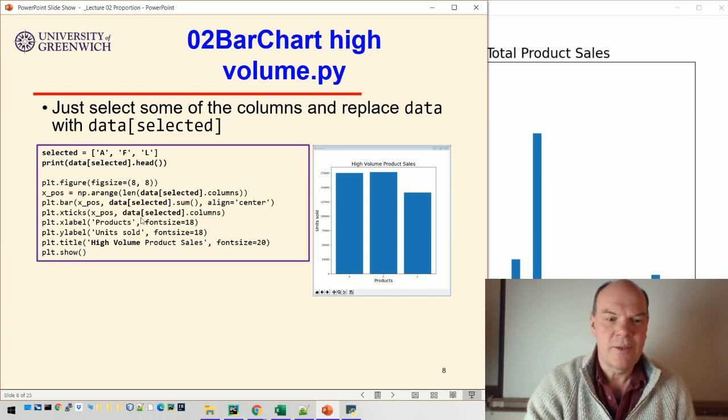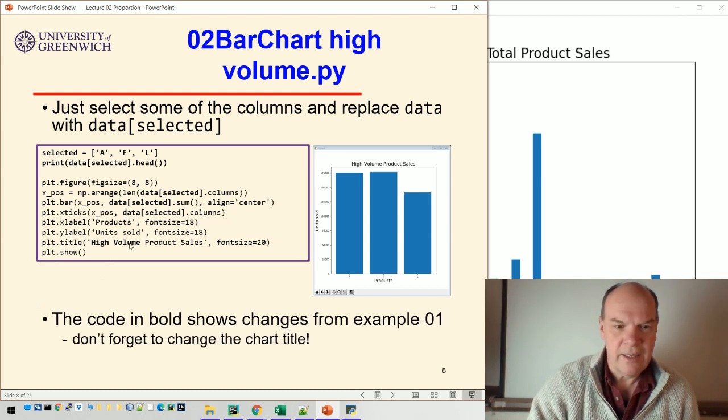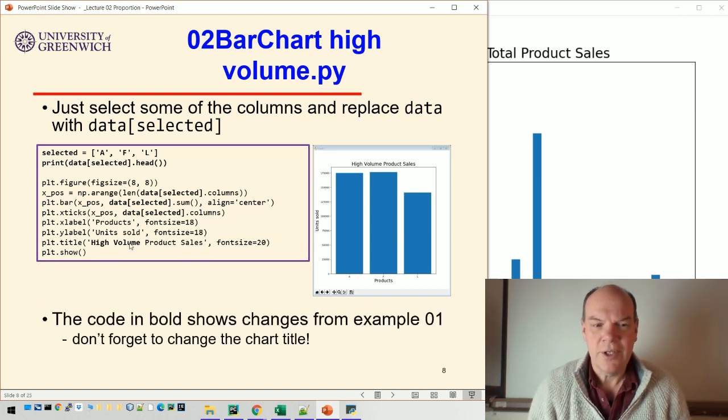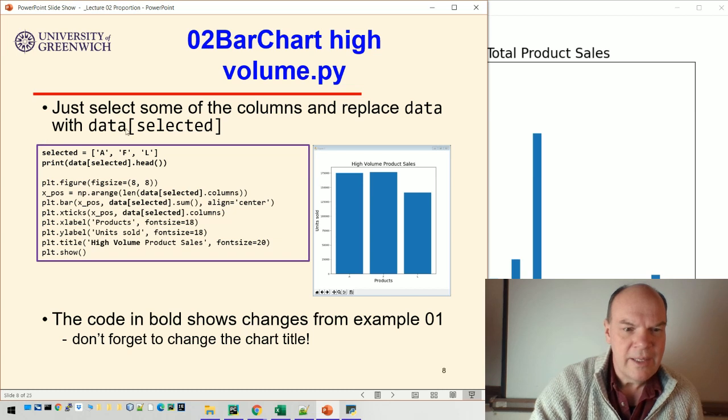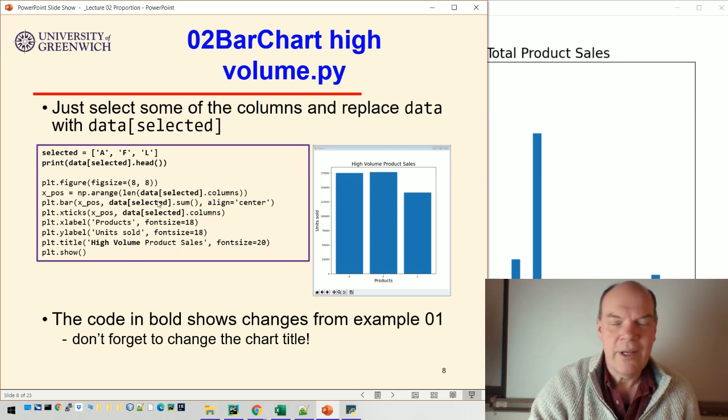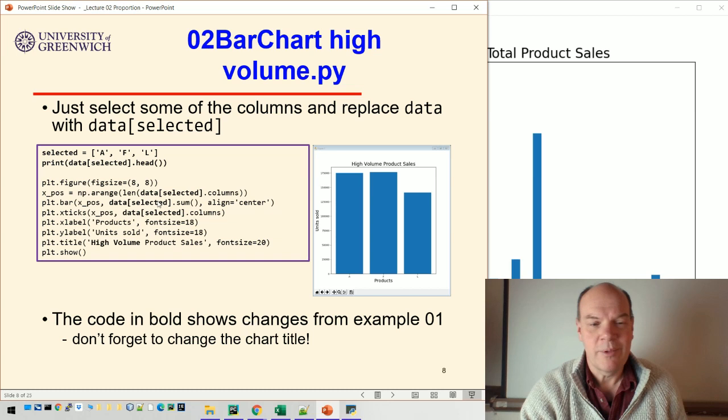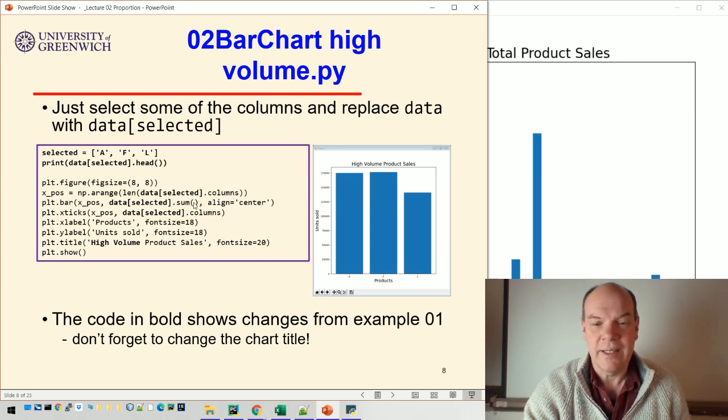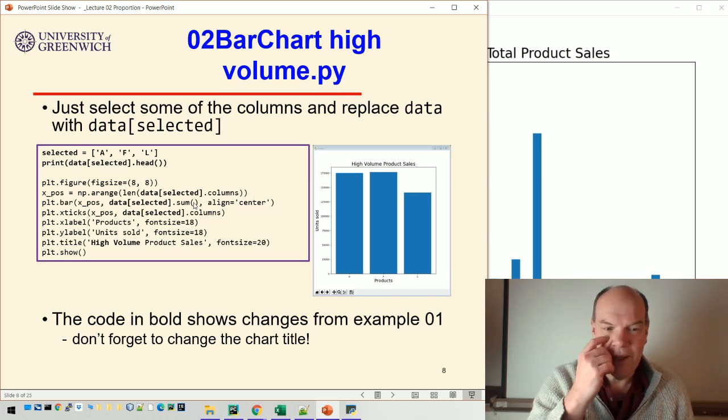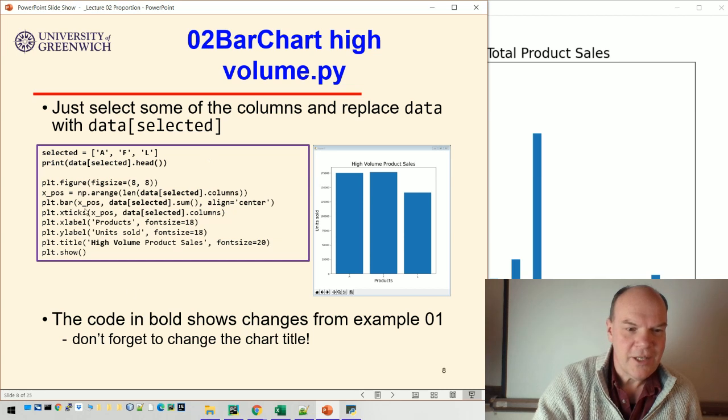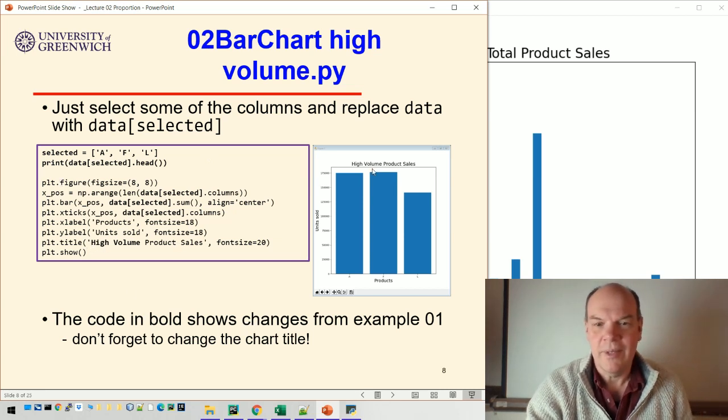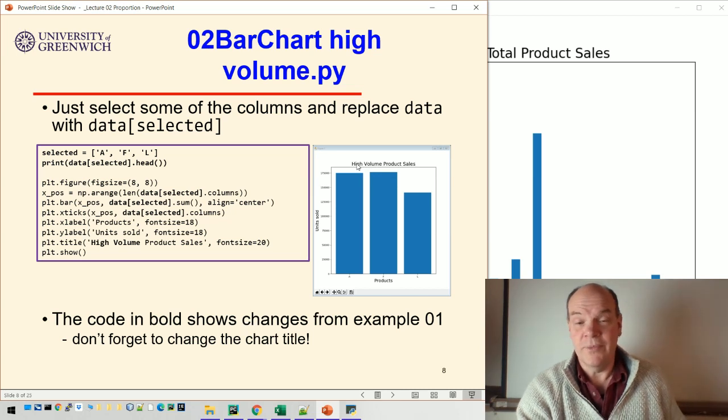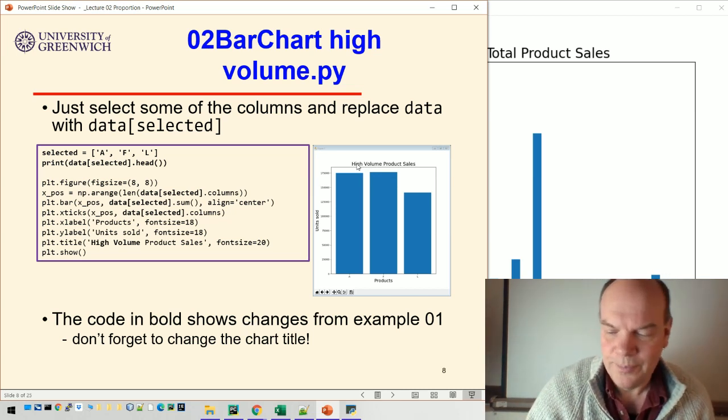I can print those out. And then this bar chart, the code in bold shows the change. I'm not sure that's very clear, but all I've done is replace, comparing example one with example two, all I've done is replace data with data[selected]. And that then draws those three columns rather than all 25 of them. Okay. And don't forget, one other change is that I've changed the top chart title. So it now says high volume at the top here, rather than all product sales or product sales.